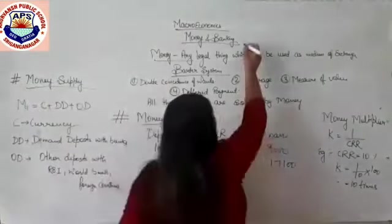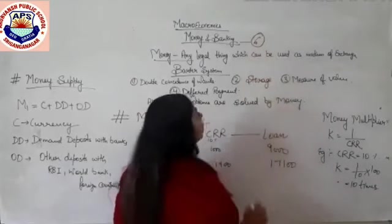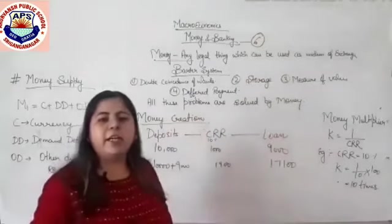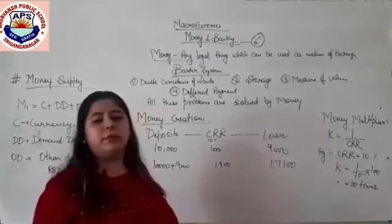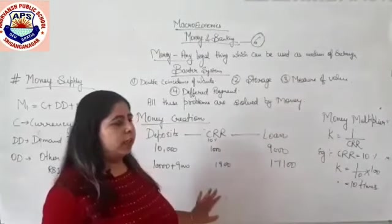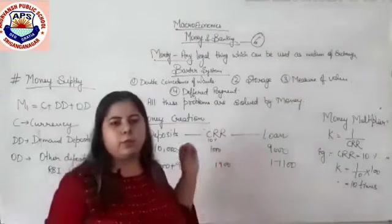From an exam point of view, this is a 6-number unit. And this is the easiest chapter — you can easily get 6 out of 6.